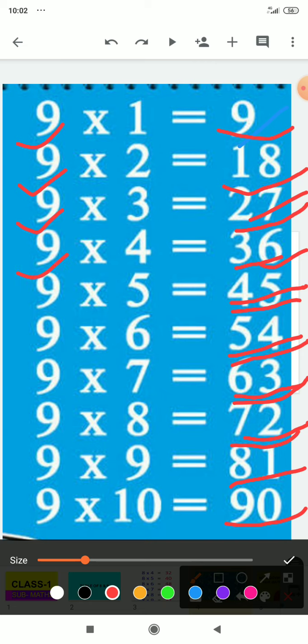9 times 4 is 36, 9 times 5 is 45, 9 times 6 is 54, 9 times 7 is 63.